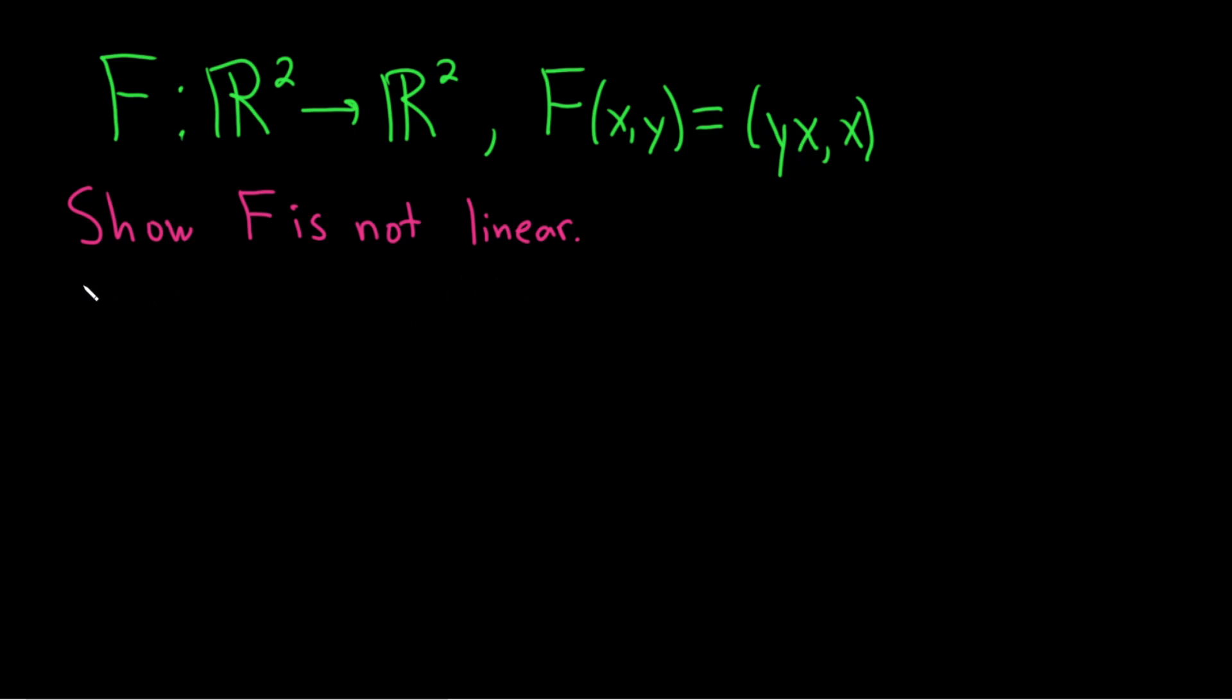So recall that a function will be a linear transformation if whenever you look at F of the vector u plus the vector v, that's equal to F of u plus F of v. And this has to be true for all vectors uv in our vector space, in this case, that would be R squared.